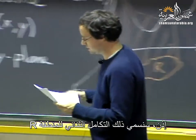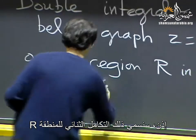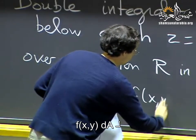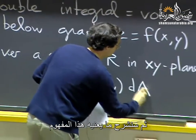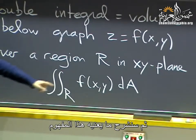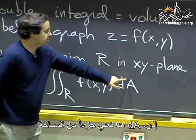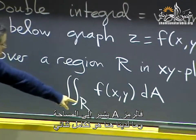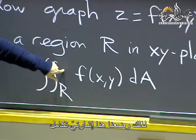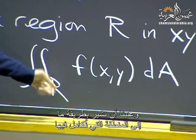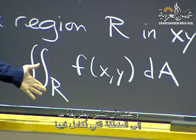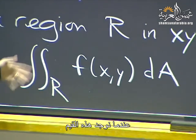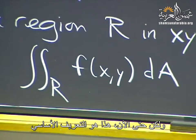We will call that the double integral over the region R of f(x, y) dA. Here dA stands for a piece of area — A stands for area. It's a double integral, so that's why we have two integral signs. We will have to indicate somehow the region over which we are integrating. We will come up with more concrete notations when we see how to actually compute these things, but that's the basic definition.